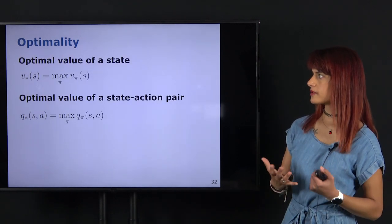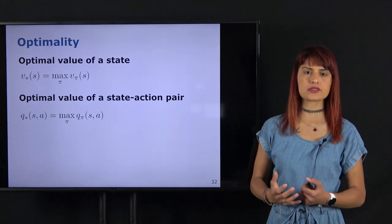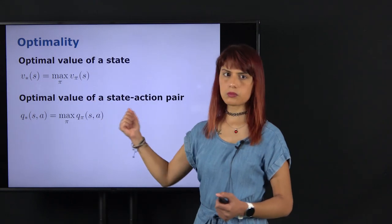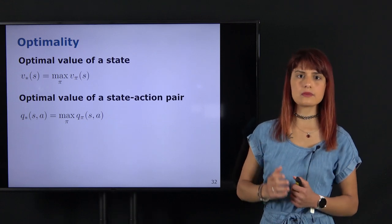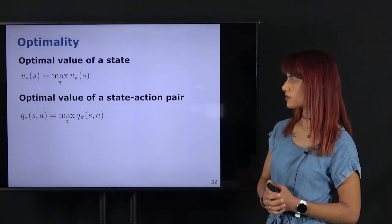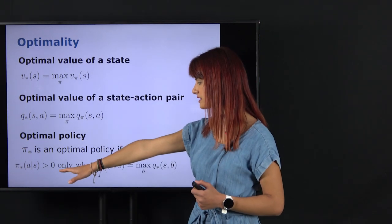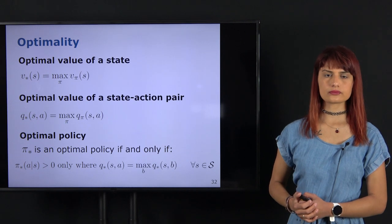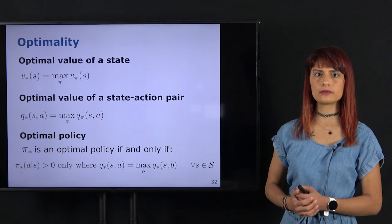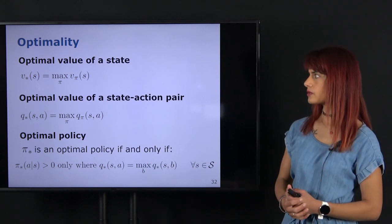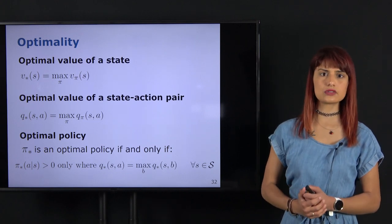The optimal value of a state and the optimal value of a state-action pair correspond to the policy or actions that lead to the maximum possible value — the best possible policy that gets the most returns. The optimal policy is the action we should follow from a given state to get the most value. This is intuitive: our agent wants to maximize expected cumulative reward, so more reward means it's doing better. These formulations quantify this in terms of actions and states within the MDP, and next we look at how to use Bellman equations and optimality concepts to find the optimal policy.